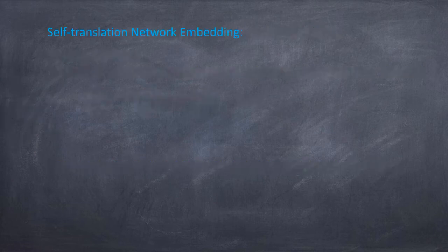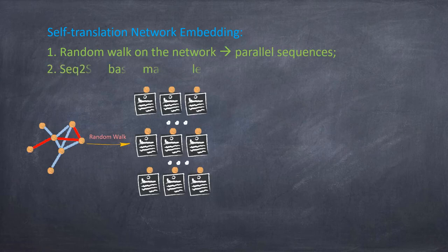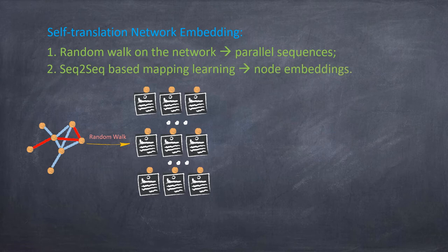We obtain parallel content and node sequences with random walks, and a sequence-to-sequence translation paradigm is devised to learn the mapping from content to node.